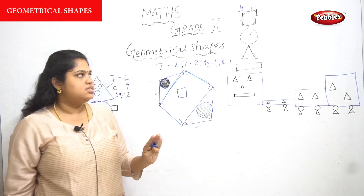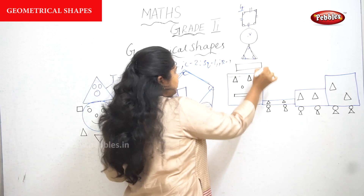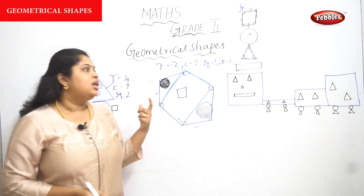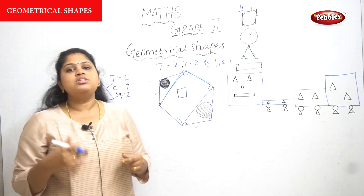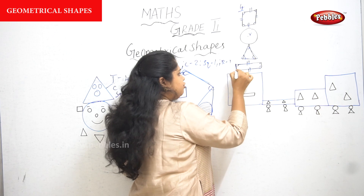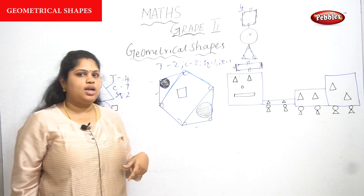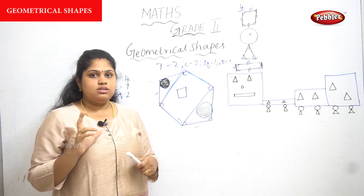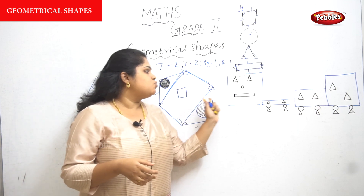A triangle has three sides — one, two, and three. A rectangle, like a square, also has four sides, but the opposite sides are equal. This side and the opposite side are equal, and the other pair of opposite sides are also equal. This is the difference between a square and a rectangle — they both have four sides, but the lengths of the sides are different from one another.